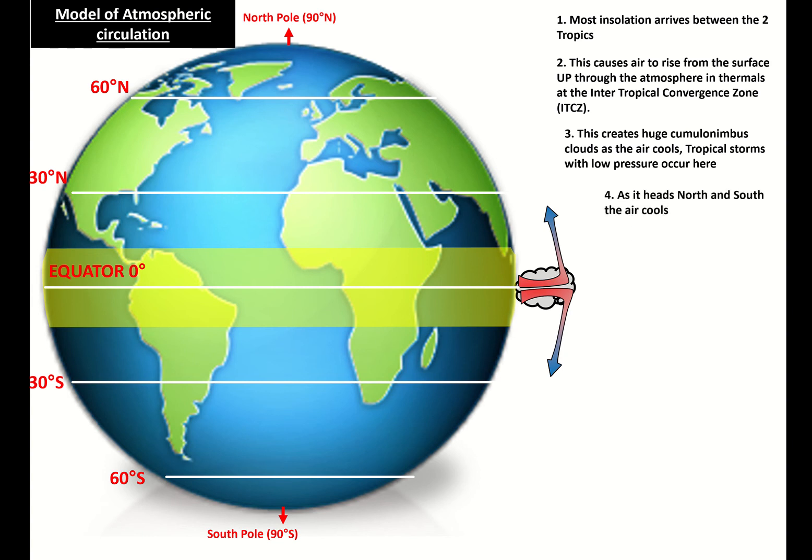But as that air hits the top of the troposphere, it migrates north and it migrates south and it cools down as it moves away from the equator. And then that air sinks back down and travels back to the equator as what are known as the trade winds.